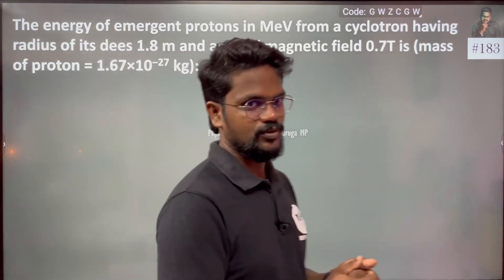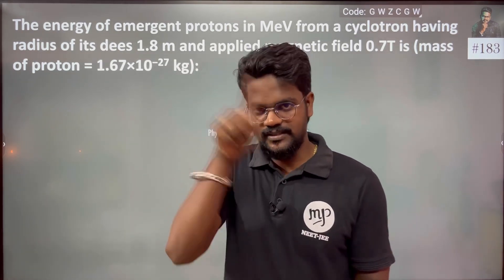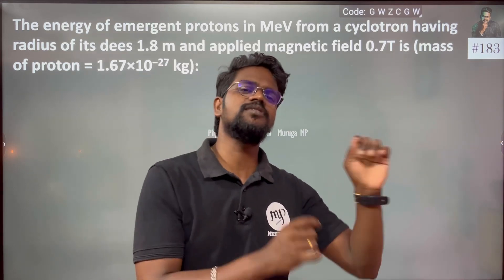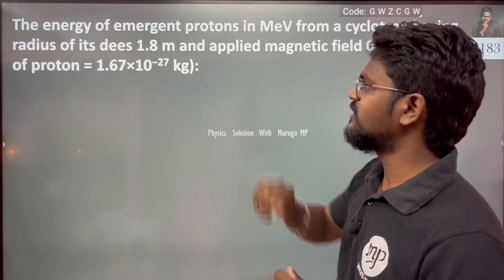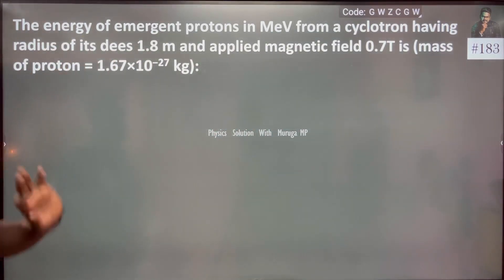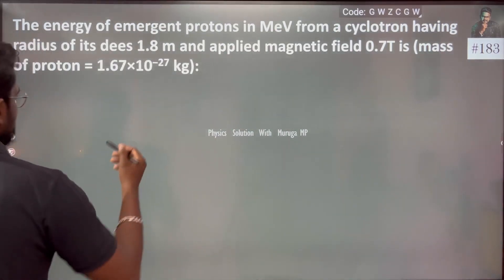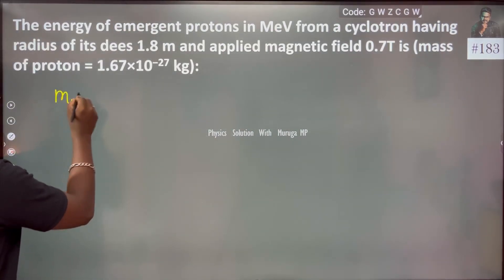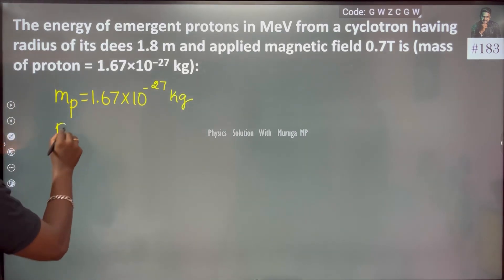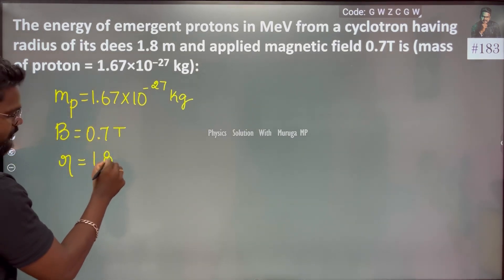The velocity of the charged particle increases because the electric field accelerates it and the magnetic field changes its direction, creating circular motion. The D's radius is 1.8 meters and the applied magnetic field is 0.7 tesla. The mass of the proton is a constant value, which is 1.67 × 10⁻²⁷ kg.